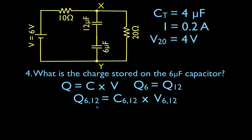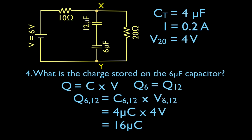We can figure out the charge on the 6 and the 12 together since they have the same charge. The total charge equals the equivalent capacitance of the two — which is 4 microfarads — times the voltage across both of them, which is 4 volts. Multiplying those together, the total charge, and therefore the charge stored on the 6 microfarad capacitor and the 12 microfarad capacitor, is 16 microcoulombs. Remember the charge rule for series capacitors.